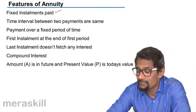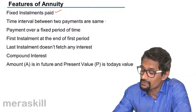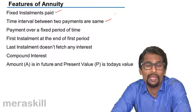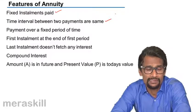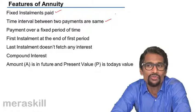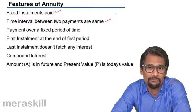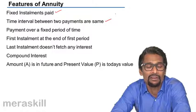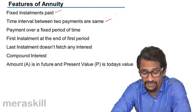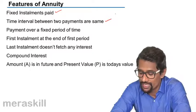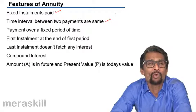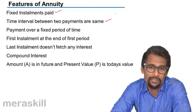The time interval between two payments is the same — that is, it's constant. Suppose you're deciding to pay a monthly installment, so you're going to pay it as an EMI. The period has been fixed at the end of every one month, and the payment is made over a fixed period of time.